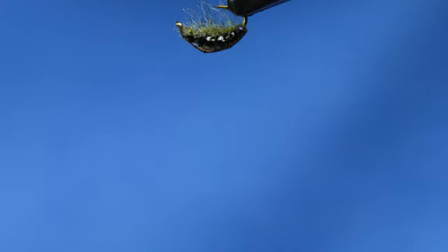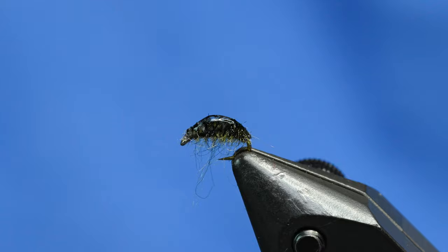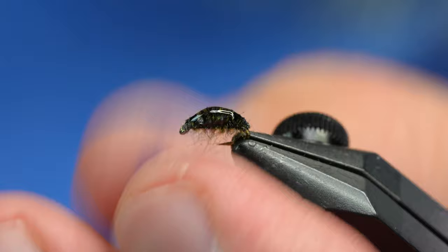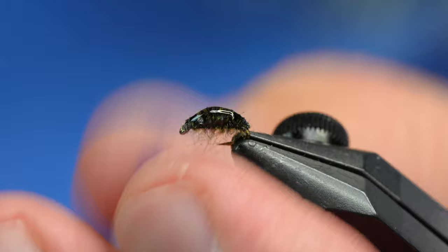You can see this Solarez thin is just thick enough to do stuff like this—it's a pretty cool resin. Hang it upside down, hit it with the light, and now it's got its shape as a scud. All we need to do now is trim off those little legs, just kind of flush with the hook, and there you have a killer little micro scud.